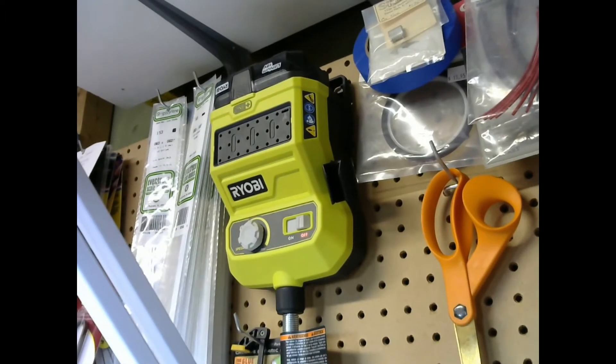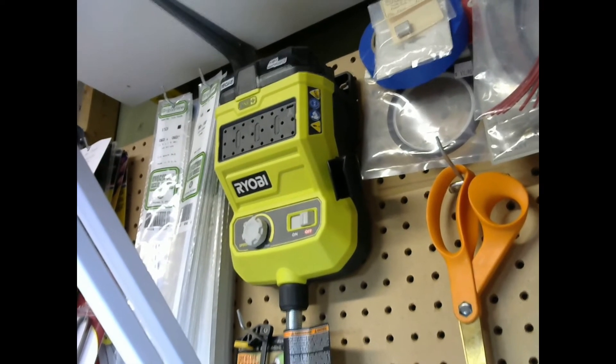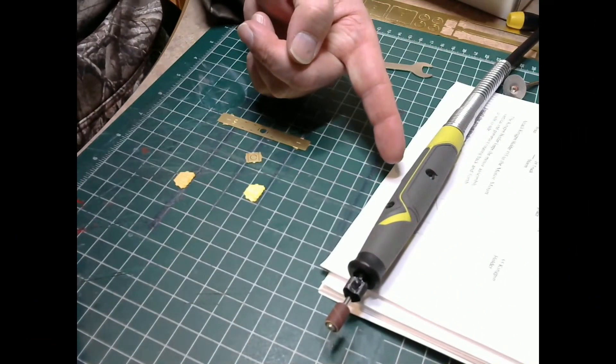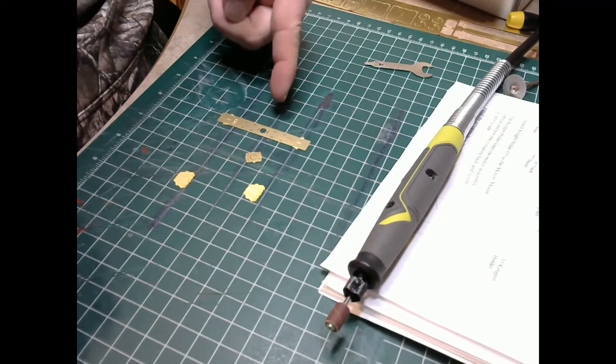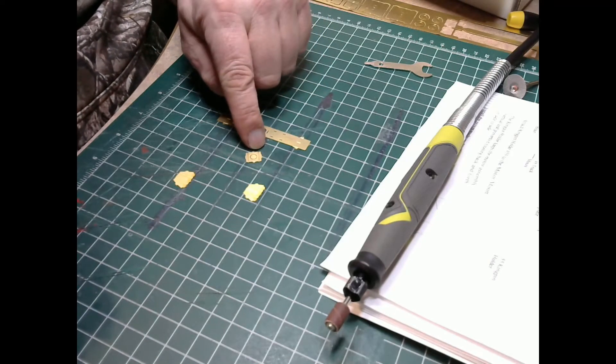This is the Ryobi 18-volt rotary tool. This is what I'm going to be using for a lot of filing in this build. Here's the other end of the rotary tool. Hold it kind of like a pencil, like any other Dremel. Here are the parts for the base that we're going to be putting a sub-assembly of today.